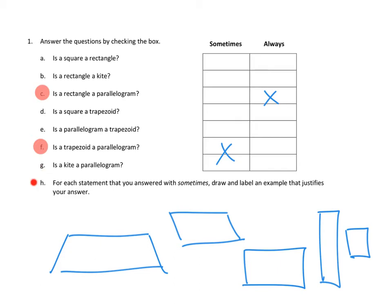And I'm noticing something that 1h is like an extra requirement for us. For each statement that you answer with sometimes, draw and label an example that justifies your answer. And we've kind of done that over here. So this is a trapezoid. I'm going to say this is a trapezoid that is not a parallelogram. And this one is a trapezoid that is a parallelogram. And this is a rectangle parallelogram. These are always, and we don't have to make drawings for that.